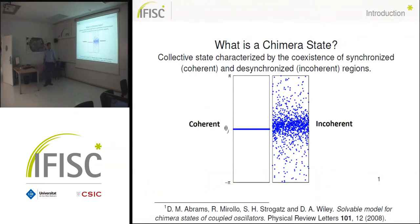We are going to start with a little introduction of what is a chimera state. In dynamical systems it is a collective state characterized with the coexistence of a synchronized state, which will be for a system of oscillators, a phase with all oscillating phases and a desynchronized region where they oscillate incoherently.